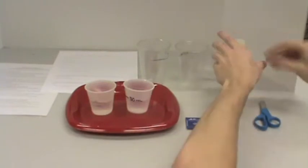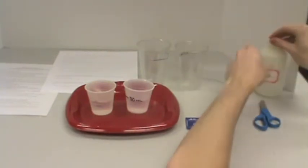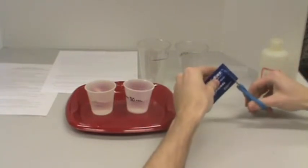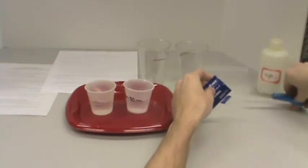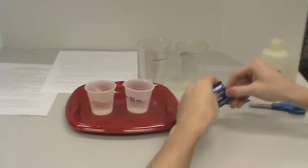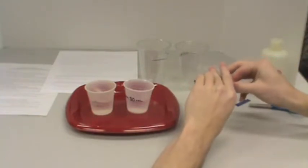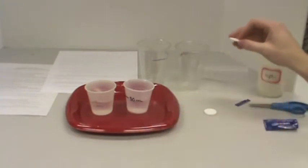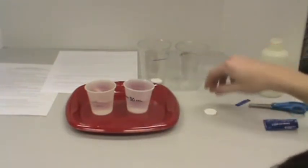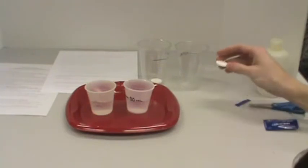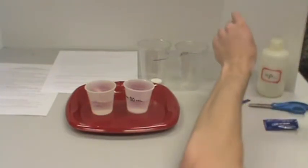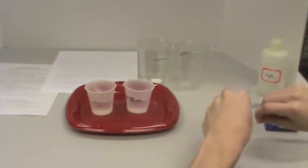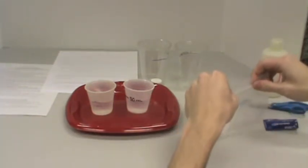Carefully cut open the packet of effervescent tablets and remove them from the packet. Place one whole tablet at the bottom of one of the dry 10-ounce plastic cups. Place the other tablet in a small ziplock bag. Seal the bag and crush the tablet by tapping on the bag with the water bottle or the palm of your hand.